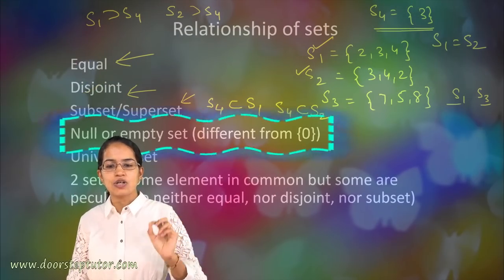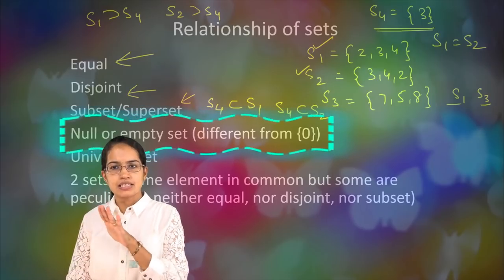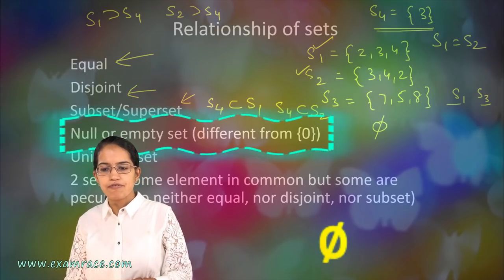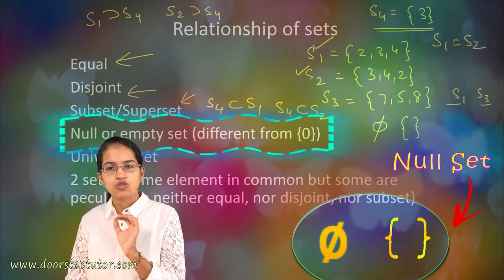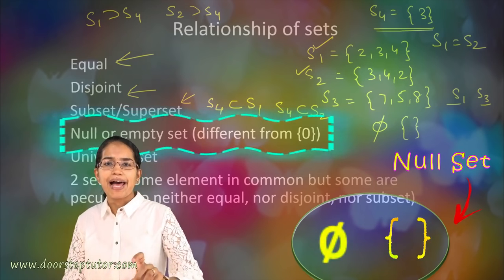The next is null set or empty set. When there is nothing, we denote it by phi or an empty bracket and that's what is a null set. Every set would have a null set.